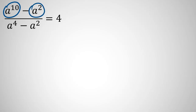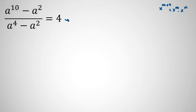We have a^10 and a², so we want to factor out a². Before that, you should know the power rule: x^(m+n) = x^m · x^n. Using this, a^10 = a^(8+2) and a^4 = a^(2+2), so we rewrite the expression as (a^(8+2) - a²) / (a^(2+2) - a²) = 4.